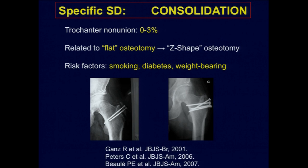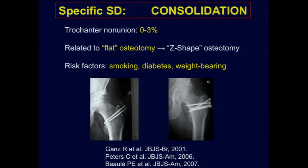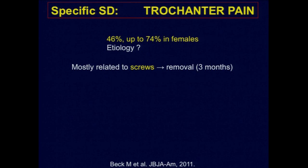Specific for surgical dislocation: consolidation problems — quite rare. In the first cases, the flat osteotomy was the factor, and this is the reason why the Z-shaped osteotomy was described by Professor Nutzli. More risk factors are the usual ones: smoking, diabetes, and patients not adhering to the rehabilitation protocol. This was a young patient, smoking despite my telling him not to, and diabetic — and of course it happened what it should happen. In those cases you have to re-operate; the bone was very brittle so I had to use many screws, but finally it healed.